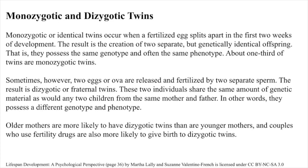Monozygotic and Dizygotic Twins. Monozygotic, or identical twins, occur when a fertilized egg splits apart in the first two weeks of development, resulting in the creation of two separate but genetically identical offspring. That is, they possess the same genotype and often the same phenotype. About one-third of twins are monozygotic twins. Sometimes, however, two eggs, or ova, are released and fertilized by two separate sperm. The result is dizygotic, or fraternal twins. These two individuals share the same amount of genetic material as would any two children from the same mother and father — they possess a different genotype and phenotype. Older mothers are more likely to have dizygotic twins than are younger mothers, and couples who use fertility drugs are also more likely to give birth to dizygotic twins.